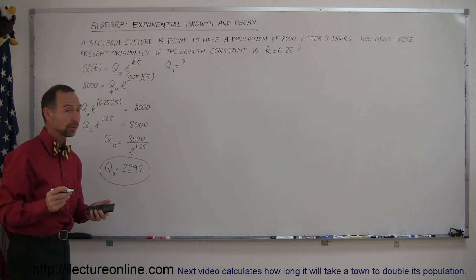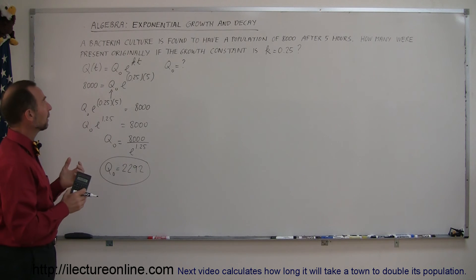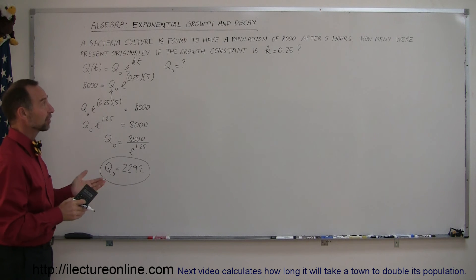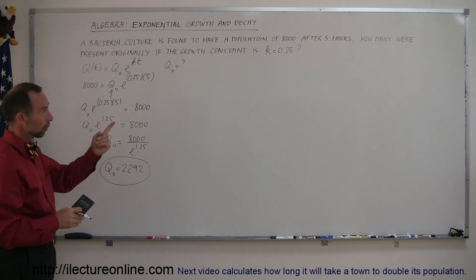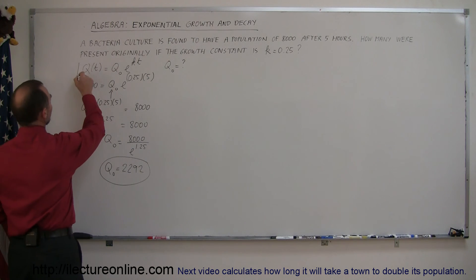All right, so what did we just do? We were given a problem where a bacteria culture has a population of 8,000 five hours after the experiment started. If the growth constant is 0.25, what was the amount of bacteria we had initially?